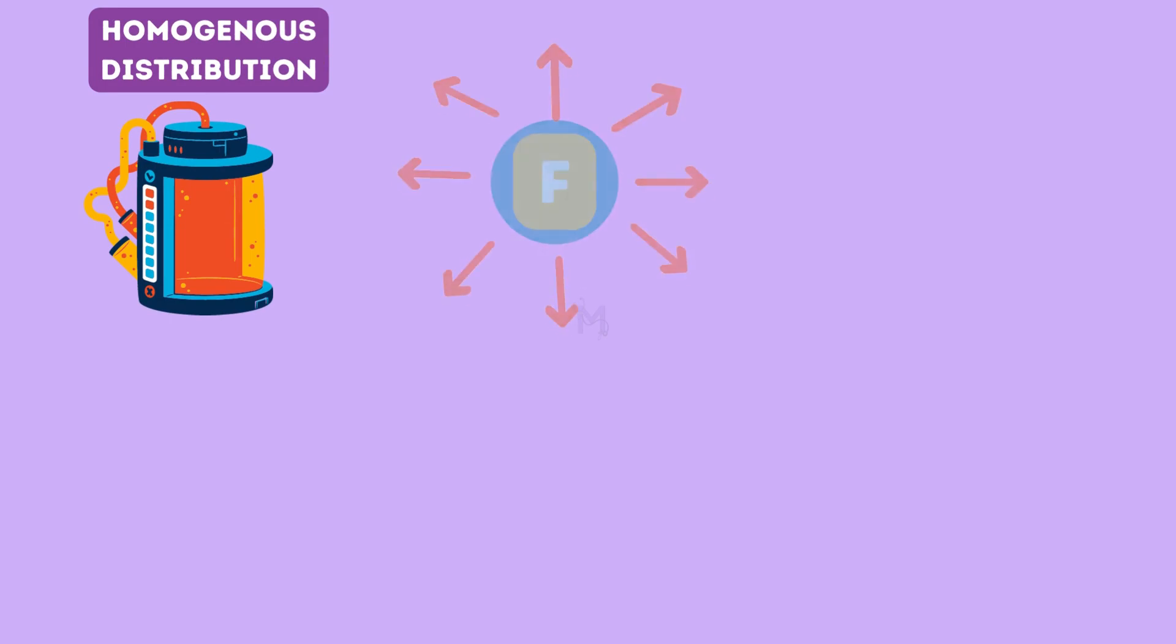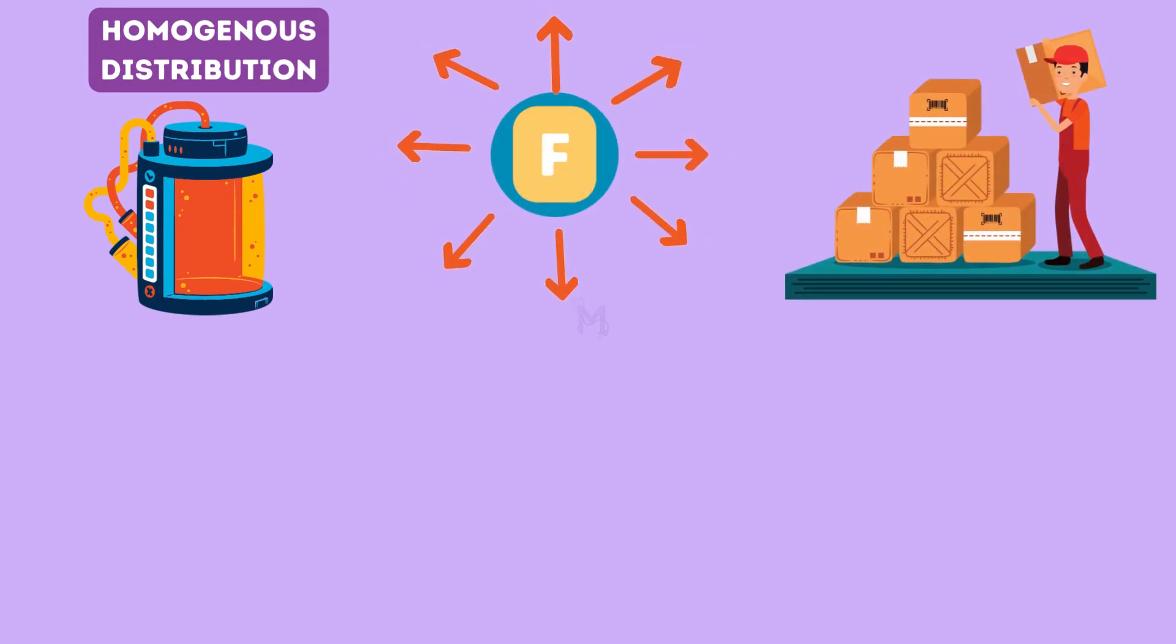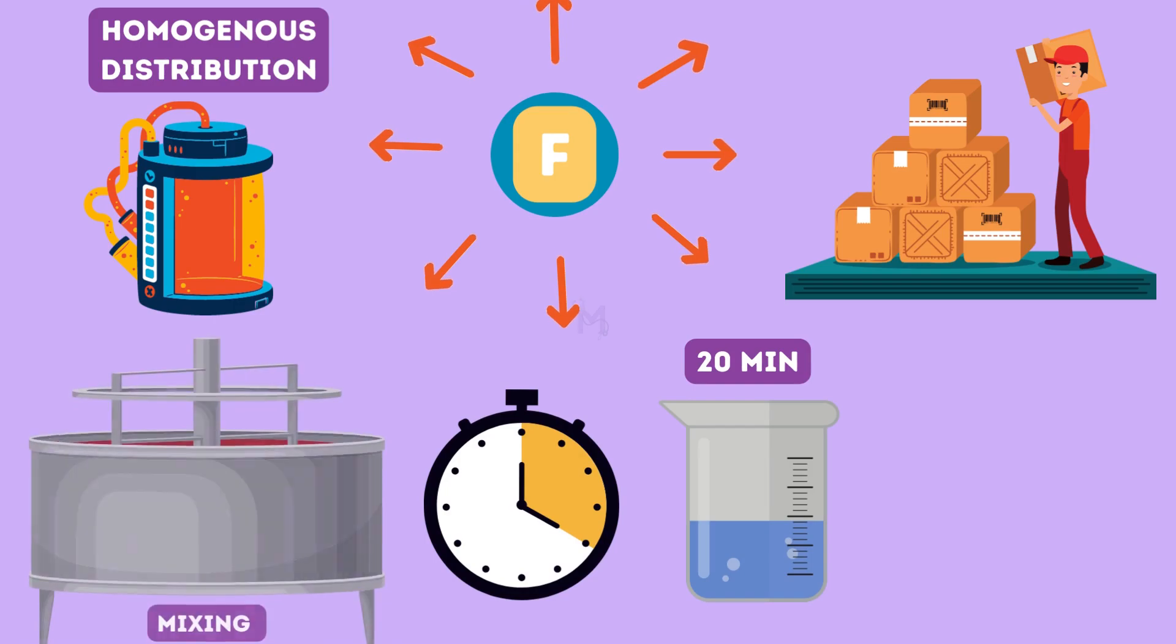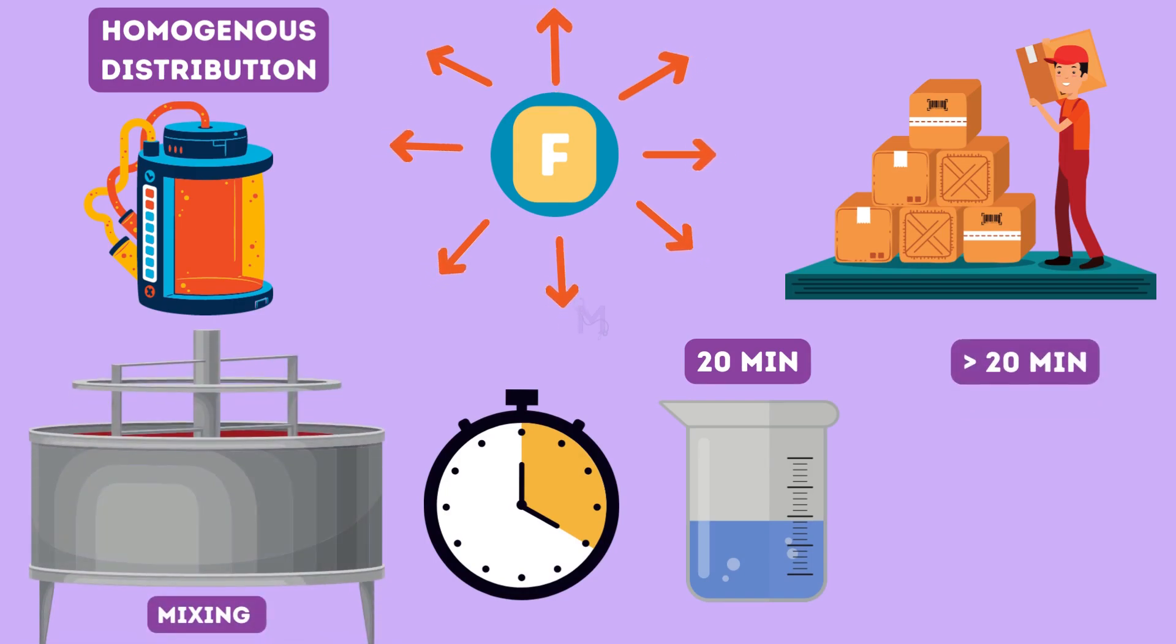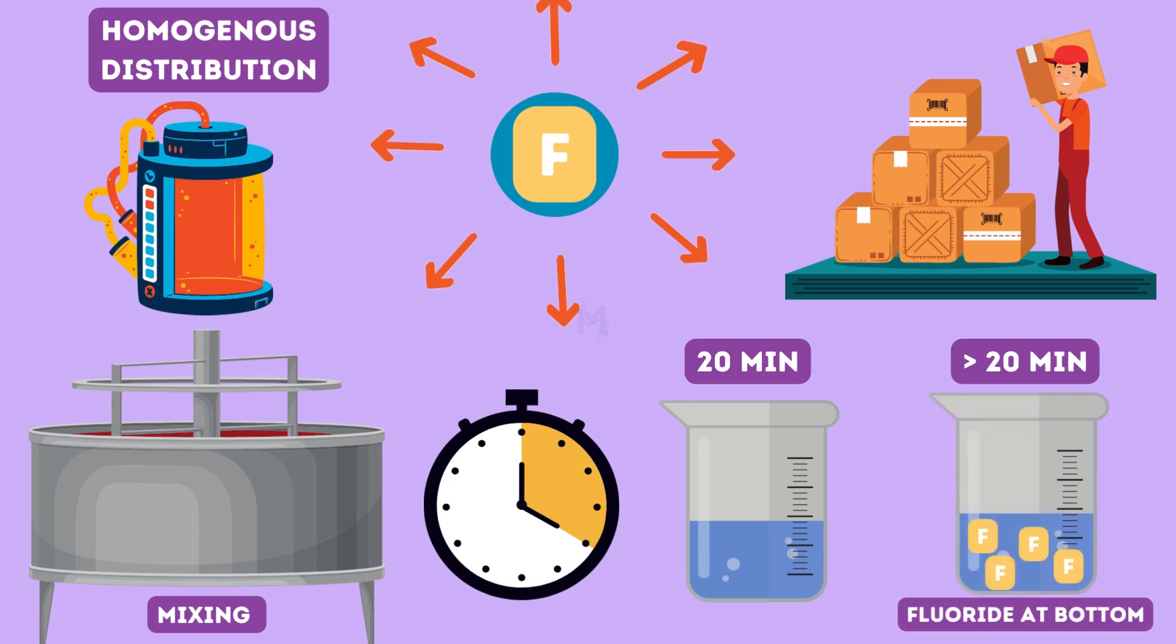It was seen that instead the most homogenous distribution of fluoride in a tonne of salt, for example, was attained after only 20 minutes of mixing. And any more mixing beyond this point only led to the selective accumulation of fluoride at the bottom of the mixing cone.